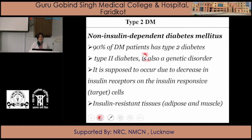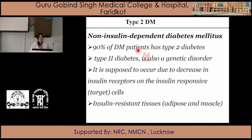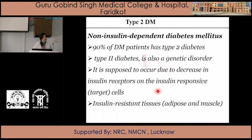The second type is Type 2 diabetes mellitus, known as non-insulin dependent diabetes mellitus. 90% of diabetic cases are of this type. There is a genetic component, as family history plays a strong positive role. It is supposed to occur due to a decrease in insulin receptors on insulin-responsive cells, as well as insulin resistance in tissues such as adipose tissue and muscle, which become inactive or do not respond to the action of insulin.